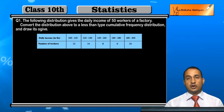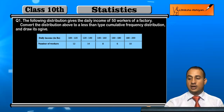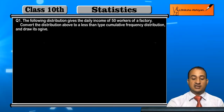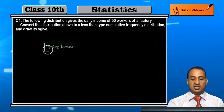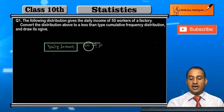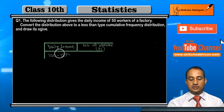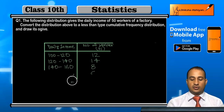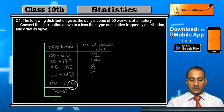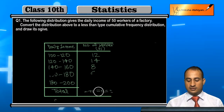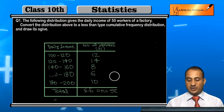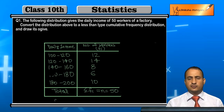First of all, let's write down the given data. We have the daily income and the number of workers, that is frequencies. Daily income: 100 to 120 with 12 workers, and so on. You can see sigma f_i equals 50.